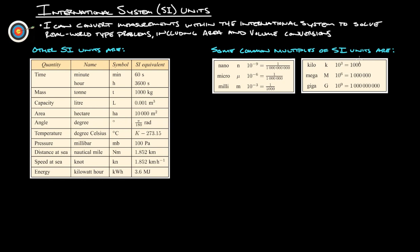Some common multiples of the SI units: nano is 10 to the negative 9th, or one billionth. Micro is 10 to the negative 6th — that's one over a million. Milli is 1 over 1,000. Kilo is 1,000, or 10 to the 3rd. Mega is a million. Giga is a billion — so a gigameter would be a billion meters. Milli and kilo are pretty common; mega and giga are not nearly as common.